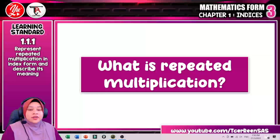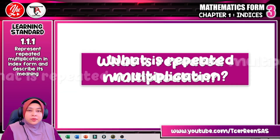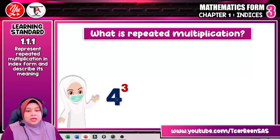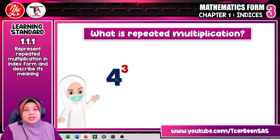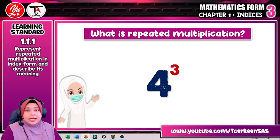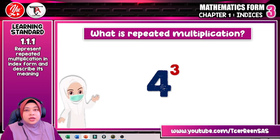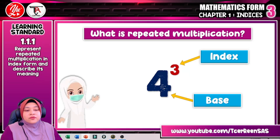In Form 1, you have learned what is repeated multiplication. Do you remember? Let us look at what is repeated multiplication. Here is 4 cubed, or 4 to the power of 3. What is the meaning of 4 cubed? 4 to the power of 3 is the same as 4 times 4 times 4. From what we have learned before, 4 to the power of 3, we call it as an index form of the number. Each number represents something: 4 is the base of the index number, and 3 is the index of the index number.